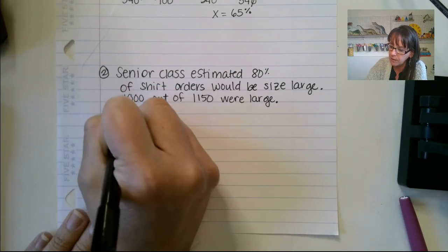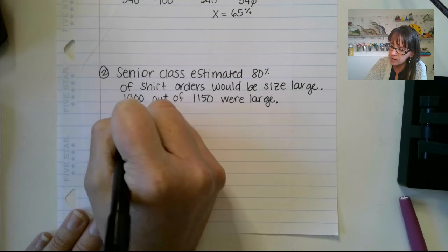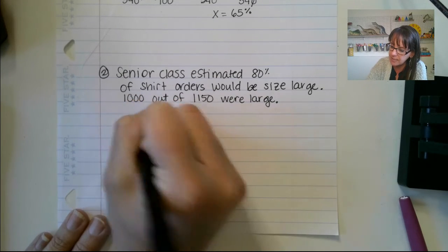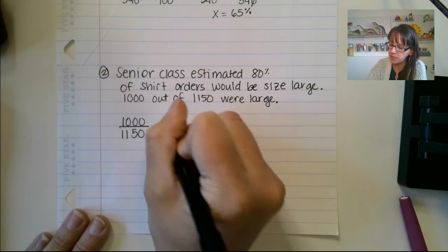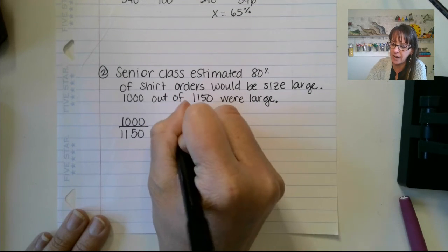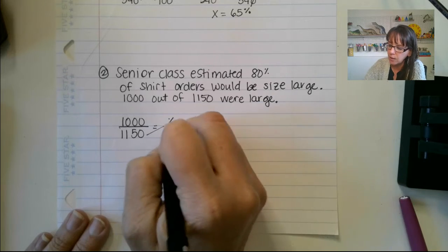1,000, that's our part over our whole was 1,150. And we're going to do part over whole equals percent over 100. And again, our percent is our x, so I'm going to put an x there. Cross multiply.